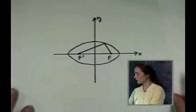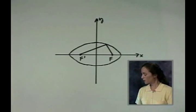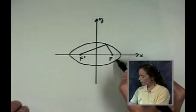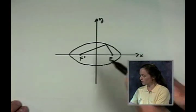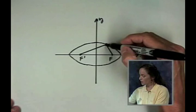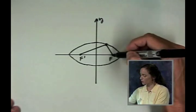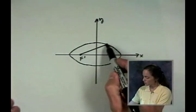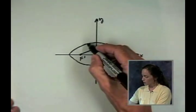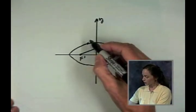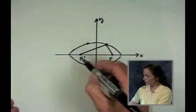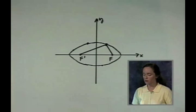Here's a picture using the definition. In the picture, F prime and F are the foci, and all the points on this oval form the ellipse. They are points such that the distance from a point to F plus the distance from that point to F prime is a fixed number — the same number no matter which point you pick on the ellipse.